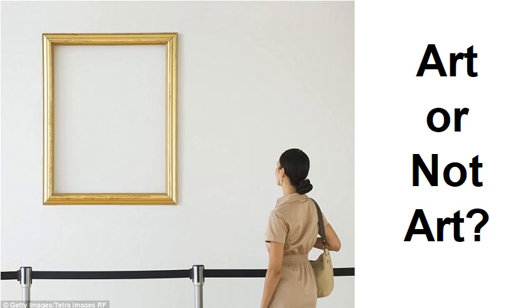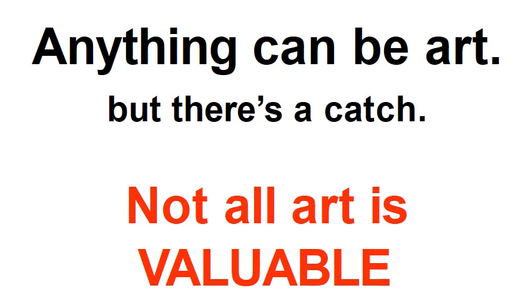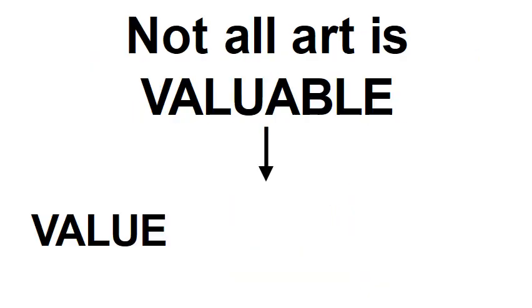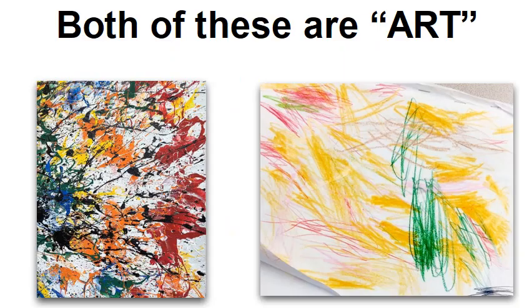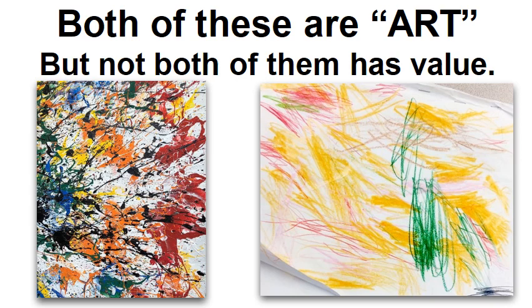All of the images can be considered as art. Why? Because in contemporary art, anything can be art. Anything that enters your mind, anything you think of, can be an example of art. But here's the catch: not all art is valuable. Not all art has value. So both of these may be considered art, but not both of them have the same value.